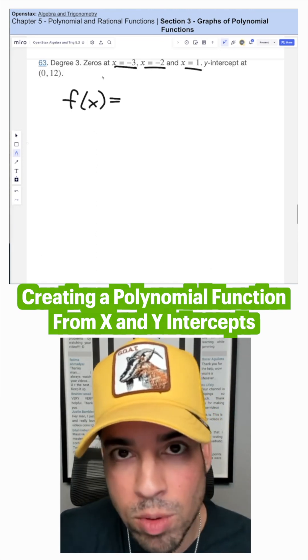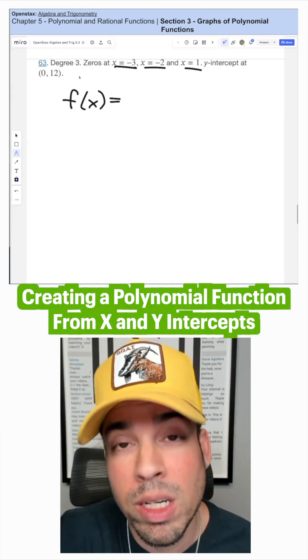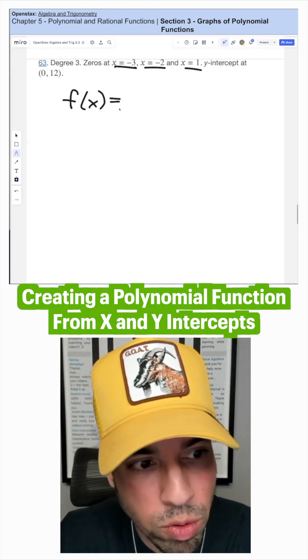We're going to assume multiplicities of one for everything. If we have a degree of three, that makes sense that they're all going to have a multiplicity of one - three zeros, third degree.